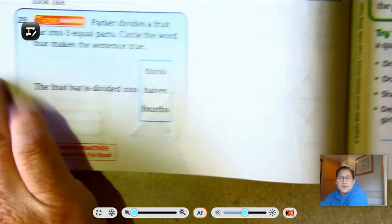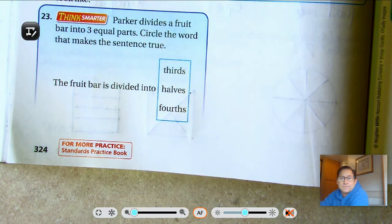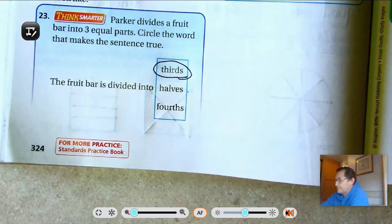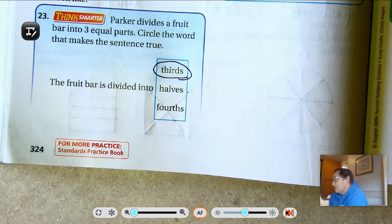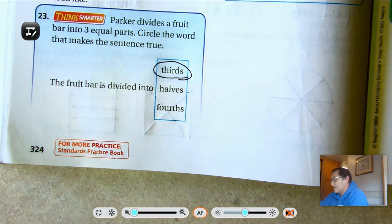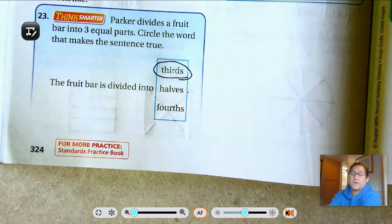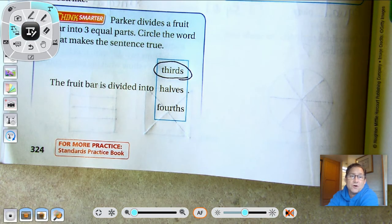And twenty-three. Parker divides a fruit bar into three equal parts. Circle the word that makes the sentence true. The fruit bar is divided into thirds. Three equal parts equals thirds. So that's all there is to that with naming of the parts. In our next lesson, we're going to be talking about equal shares. And so we'll continue with our discussion of fractions then. So until then, may the numbers always be in your favor.